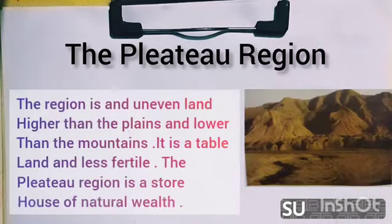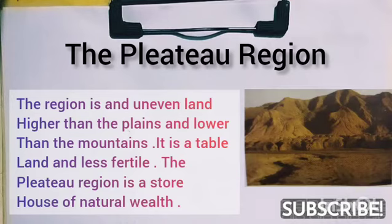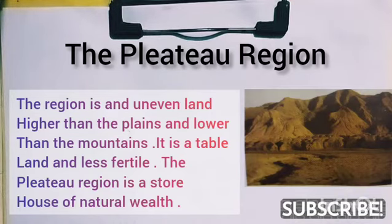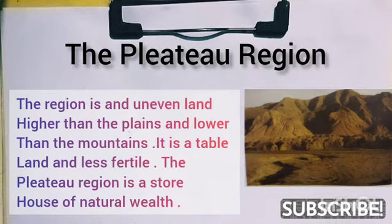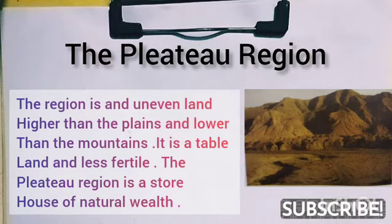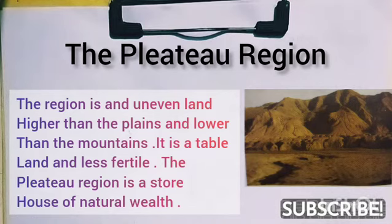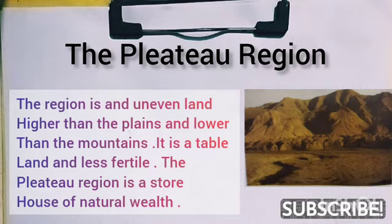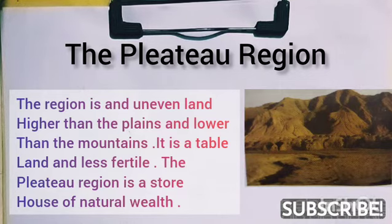The fourth physical feature of India is the plateau region. The plateau is an uneven land higher than plains and lower than mountains. It is a table land and less fertile. The plateau region is a storehouse of natural wealth.